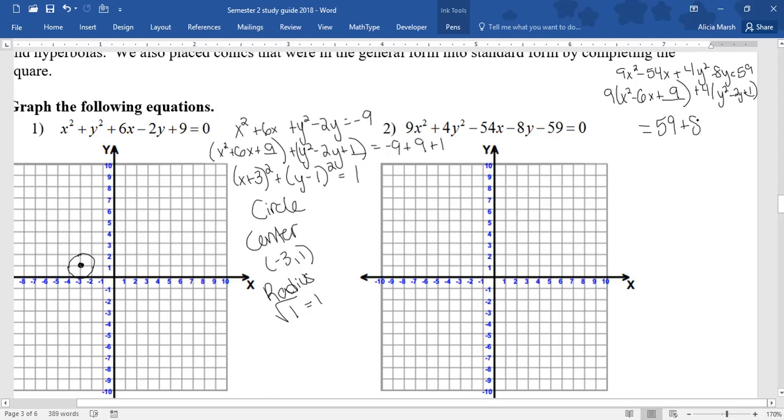Technically, that 9 is 81, right? 9 times 9. And then 4 times 1 is 4. So if I factor that, that's going to be x minus 3 quantity squared, right? Two numbers that multiply to give me 9, but add together to give me negative 6. I'm going to do the same thing to my y's. And I should be equal to 59 plus 81 plus 4. 59 plus 81 plus 4, that's 144.